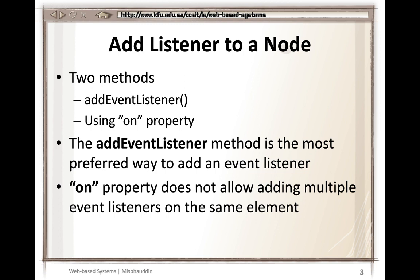There are basically two ways to define event listeners. You can use the addEventListener method, which you attach to an element to listen for a specific event. Alternatively, you can use the on property. The key difference is that the on property only allows you to attach one event per element. If you want to listen to more than one event on the same element, you must use addEventListener.